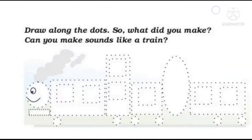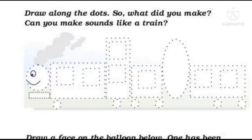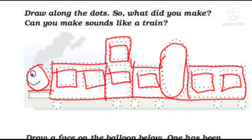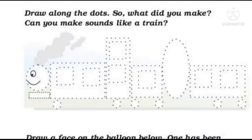Draw along the dots. What did you make? Can you make sounds like a train? Yahaan par in dots ko join karke aapko kya karna hai? You have to make a train. This is a train, you can see here. Aapko in sabhi dots ko join karna hai, rectangle, square aur circles diye hain, and you can make a train. Train kaisi awaaz karti hai? Chuk chuk chuk chuk, haina? So do this.